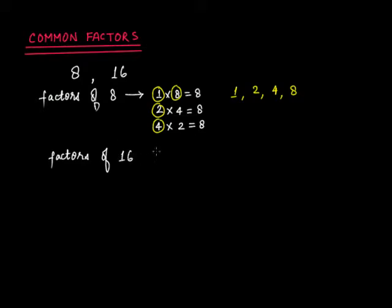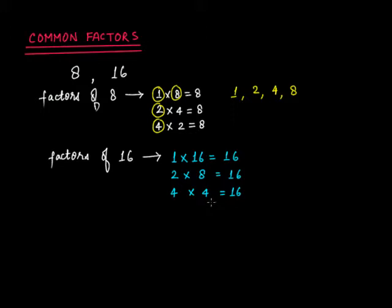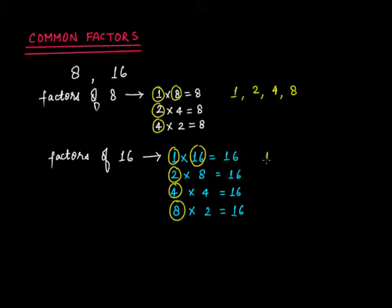Now let's find the factors of 16. We have 1 times 16 is 16, 2 times 8 is 16, 4 times 4 is 16, and 8 times 2 is 16. So the factors of 16 are 1, 2, 4, 8, and 16.